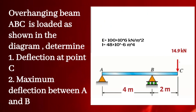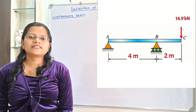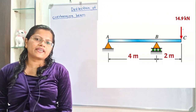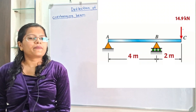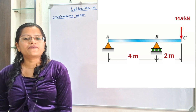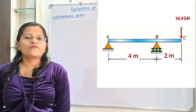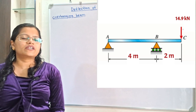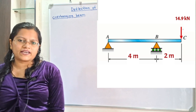Overhanging beam ABC is loaded as shown in the diagram. We need to determine the deflection at point C and the maximum deflection between A and B. In the diagram, at points A and B fixed supports are given, and at the free end at point C, a load of 14.9 kilonewton is acting in the downward direction.